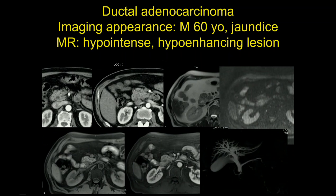With CT, sometimes we can have some difficulties in seeing this lesion, especially when very small. MRI has much better contrast resolution than CT, so we can easily appreciate findings in a patient presenting with jaundice.